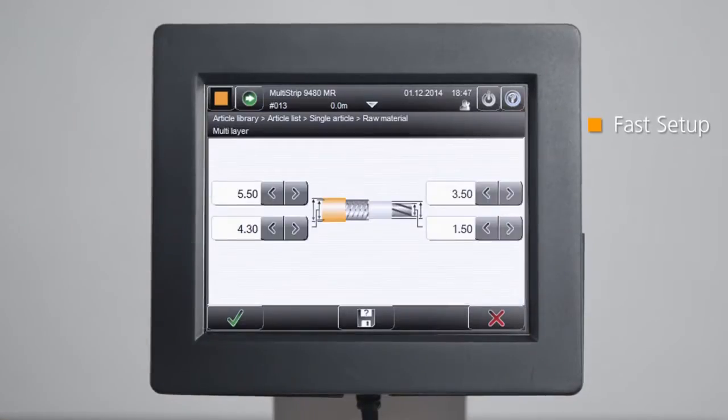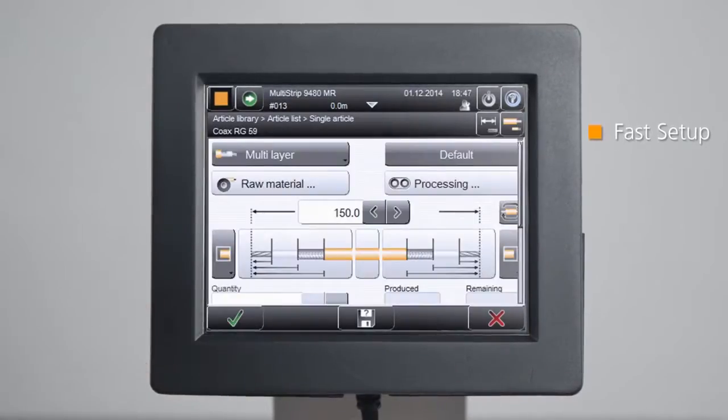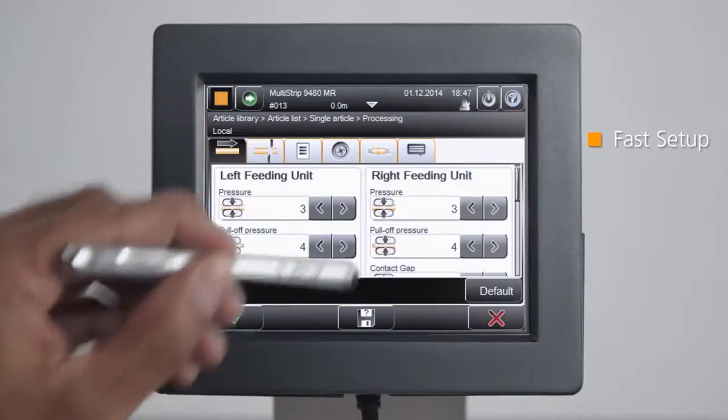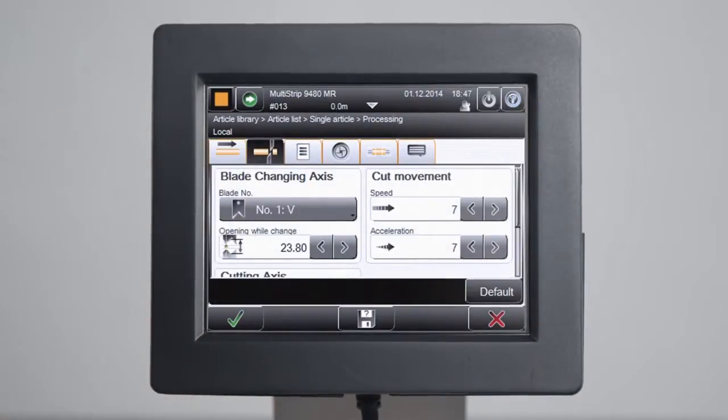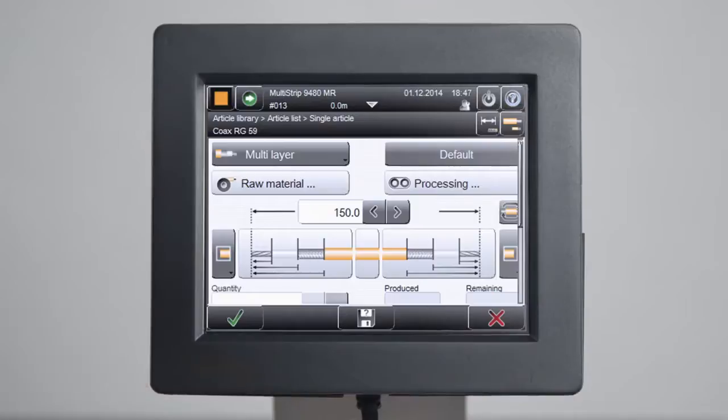Raw material and freely programmable processing libraries provide quick setup and easy changeover. Default values for a full range of wire sizes are stored in the built-in libraries.